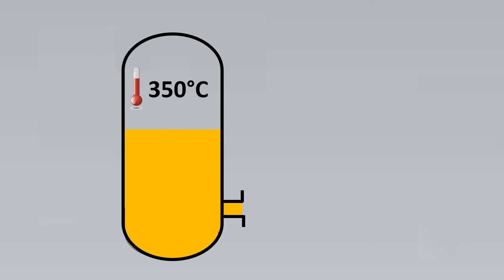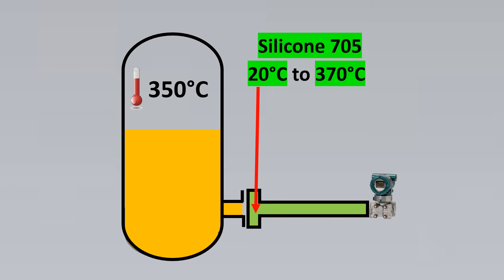Here first we look at the traditional system. The traditional system states that because the process temperature is so high it is 350 degrees Celsius, we have to go with Silicon 705. But what about the ambient conditions?